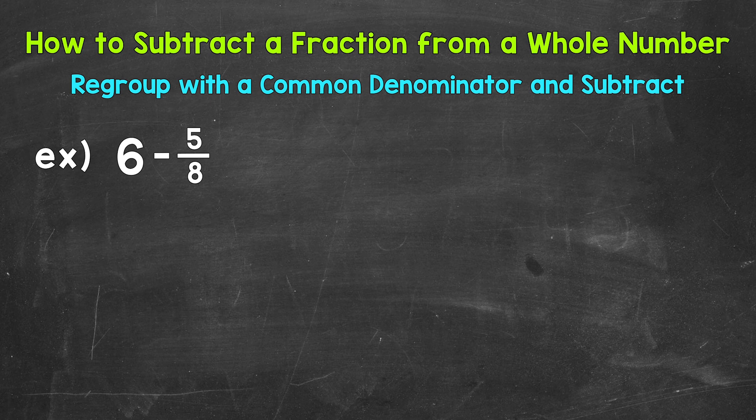So for example, our 6 wholes we're going to regroup as 5, and then our fractional part needs to equal one whole. Now a fraction equals one whole when the top number, the numerator, is the same as the bottom number, the denominator.